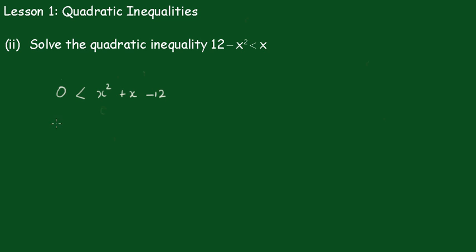And we'll just rearrange that, write it so it's easy to read. x squared plus x minus 12 is greater than 0.